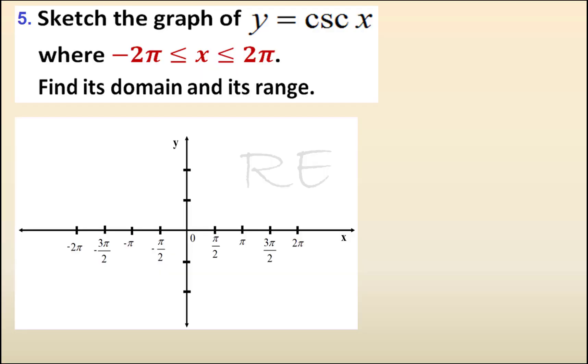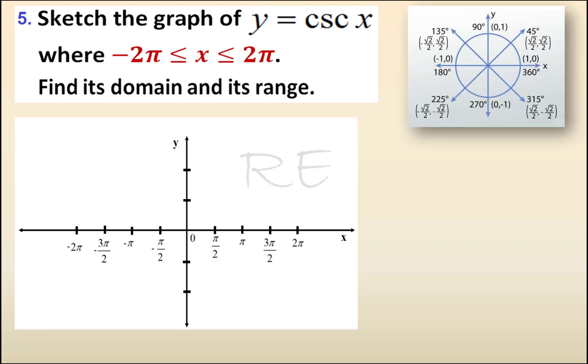Sketch the graph of y equals cosecant x, where x is largely between negative 2π and 2π. If we understand cosecant x to be 1 over sine x, we can use the graph of sine x to help us with the graph of cosecant x.